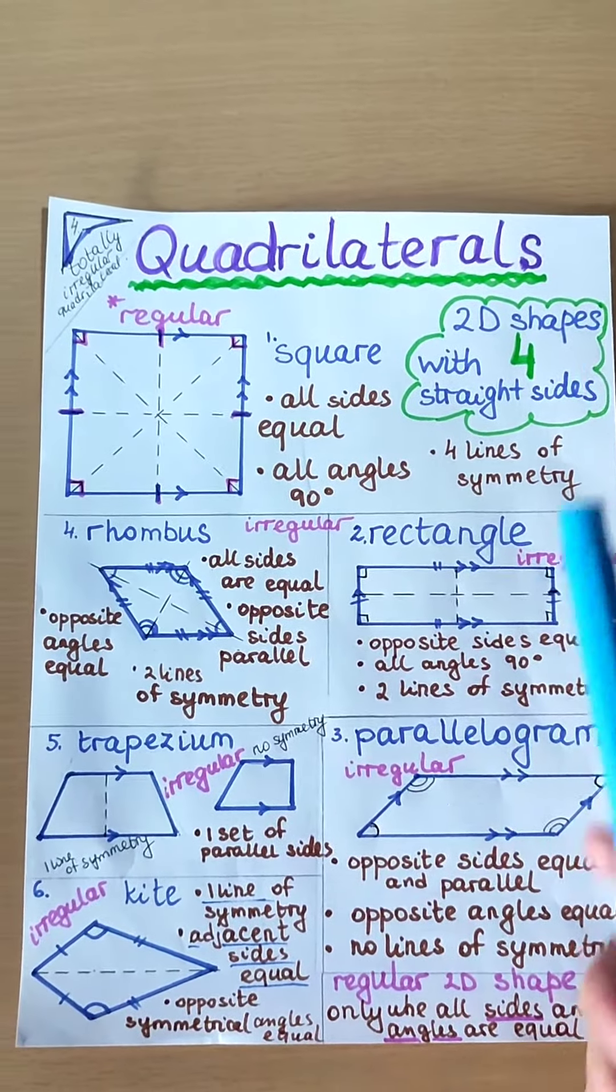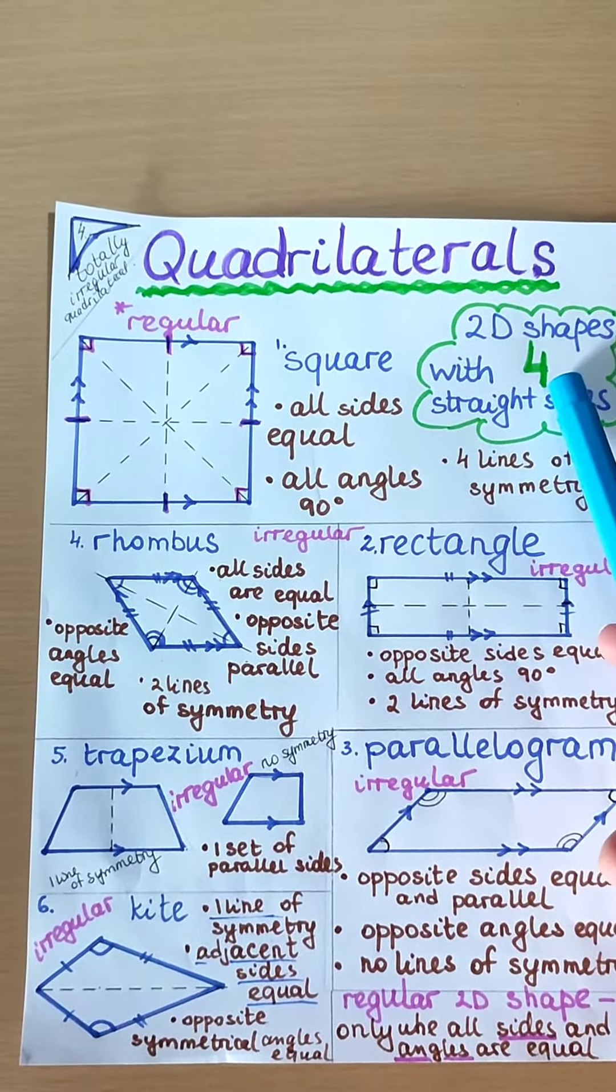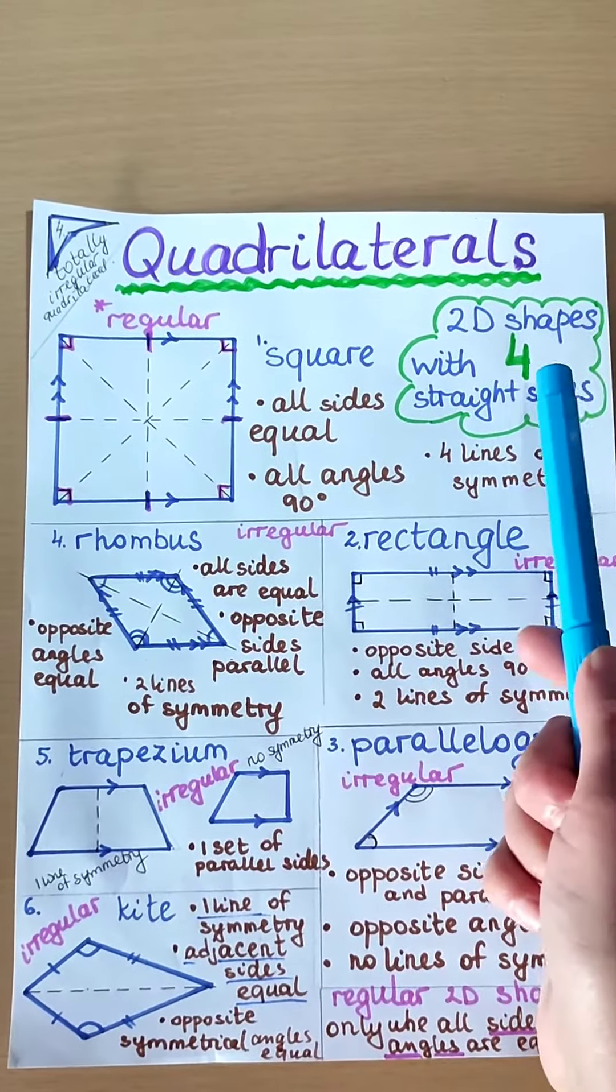Quadrilaterals are 2D shapes with 4 sides. Quad means 4.